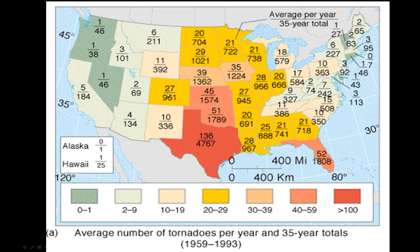The state that has the most tornadoes annually over this 35-year period is Texas. Looking at this map, we can easily say Texas is the most impacted by tornadoes, so we should put the national tornado center in Texas — right in central Texas, Austin, Texas. That's the epicenter of tornadoes because this is what we're seeing.